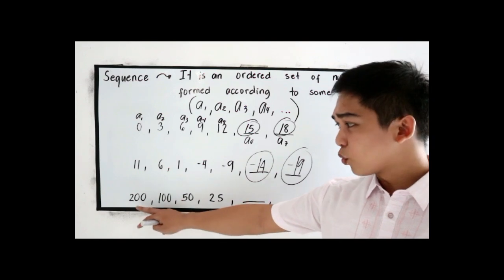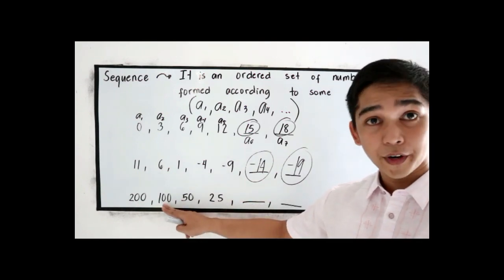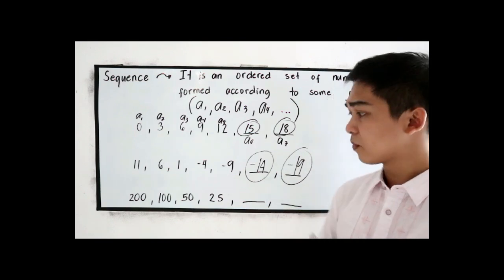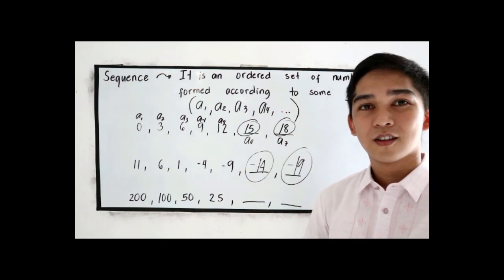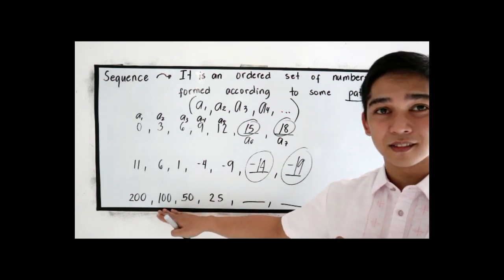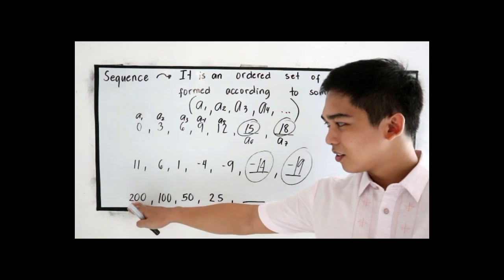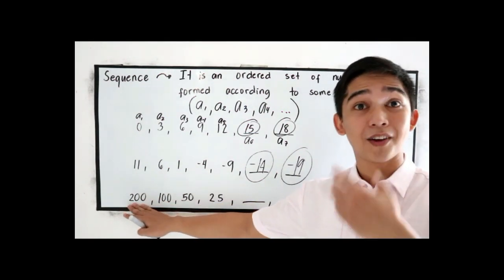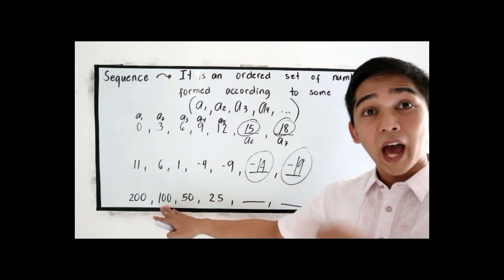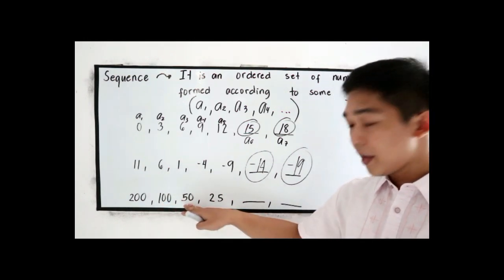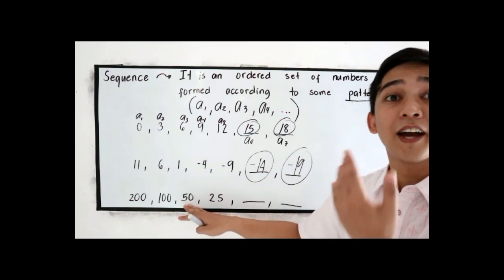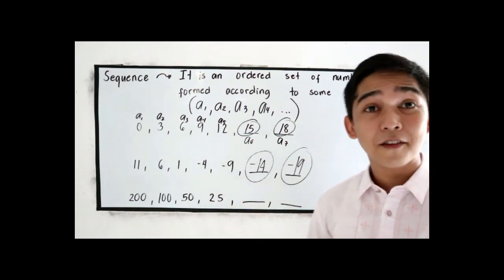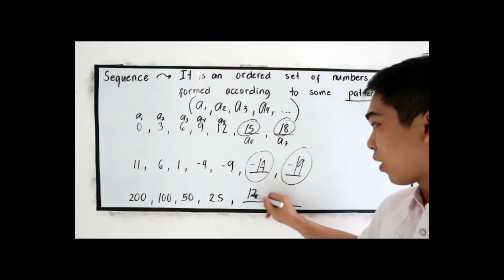Next pattern is 200, 100, 50, 25. We're going to find the next two terms. The rule used in this pattern is dividing by 2: 200 divided by 2 gives 100, 100 divided by 2 gives 50, 50 divided by 2 gives 25. So the next term is 25 divided by 2, which is 12.5.